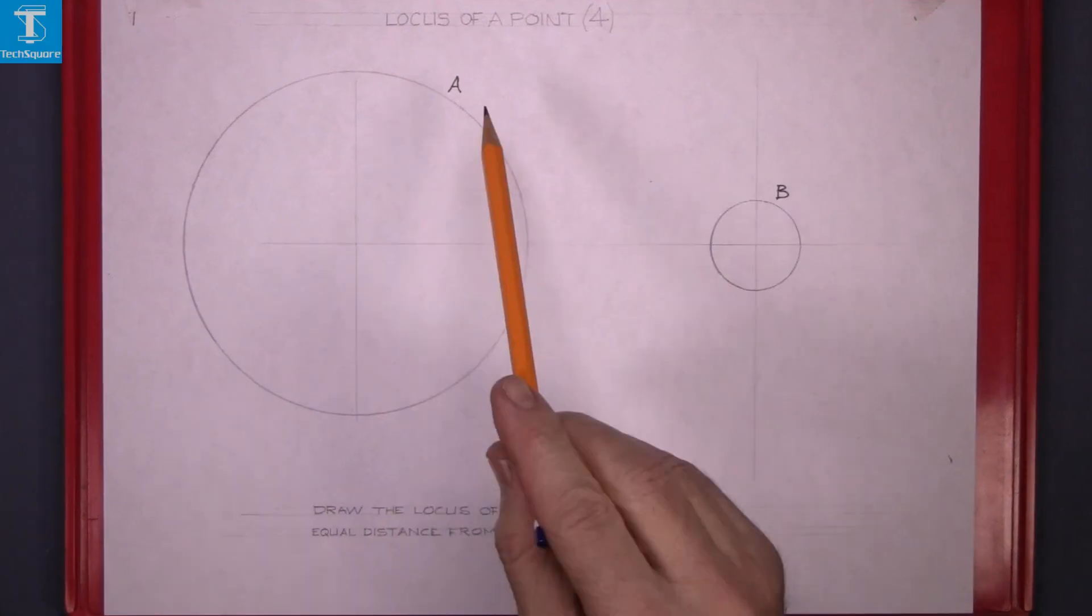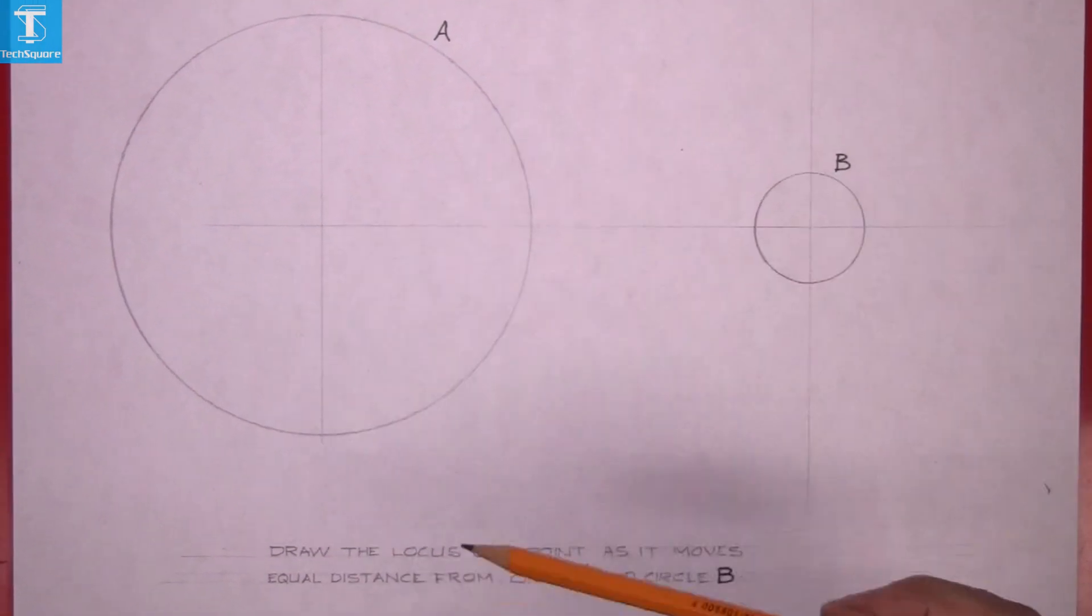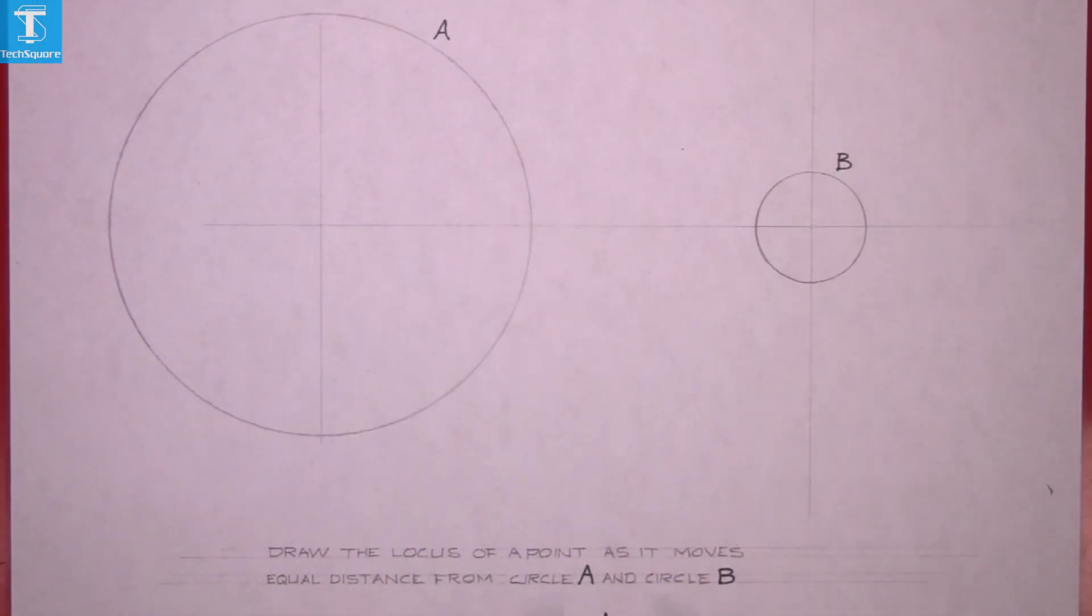Now this next exercise, locus of a point 4, draw the locus of a point as it moves equal distance from circle A and circle B.